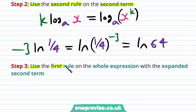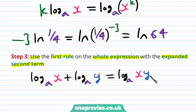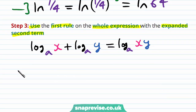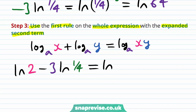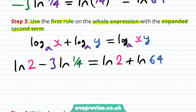Our next step is to use the first rule on the whole expression with the expanded second term. Our first rule is that the log base a of x plus the log base a of y is equal to the log base a of x times y. Our original expression was the natural logarithm of 2 minus 3 lots of the natural logarithm of 1 quarter. We've shown this to be the same as the natural logarithm of 2 plus the natural logarithm of 64, and therefore we can use this rule and it will become the natural logarithm of 2 times 64.